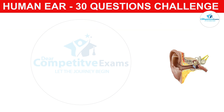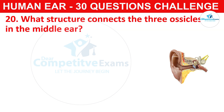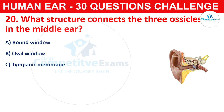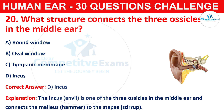Question number twenty: what structure connects the three ossicles in the middle ear? Your options are round window, oval window, tympanic membrane, or incus. The correct answer is D, that is incus. The incus is one of the three ossicles in the middle ear and connects the malleus (the hammer) to the stapes.